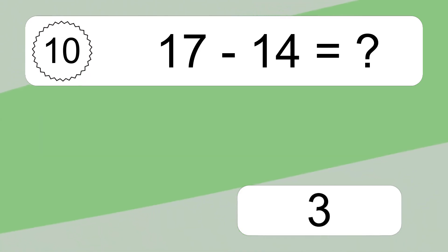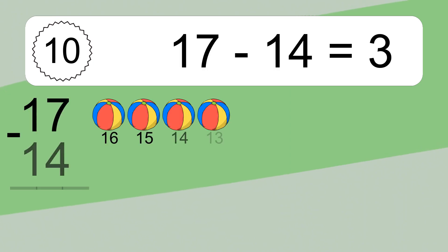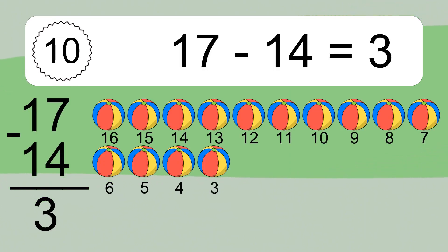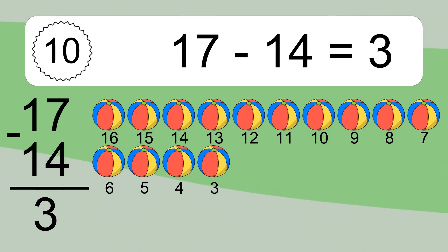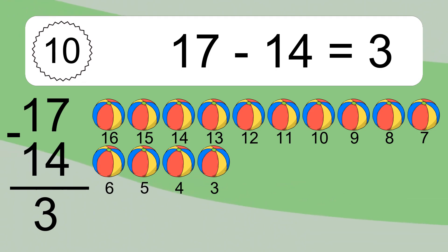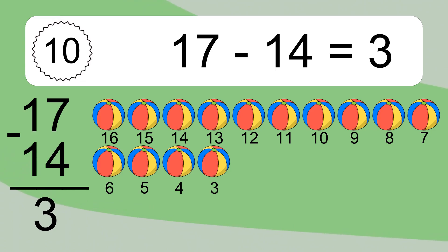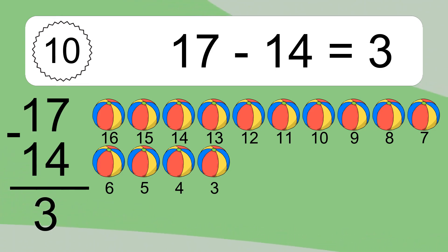17 minus 14 equals 3. Let's count it! 16, 15, 14, 13, 12, 11, 10, 9, 8, 7, 6, 5, 4, 3.